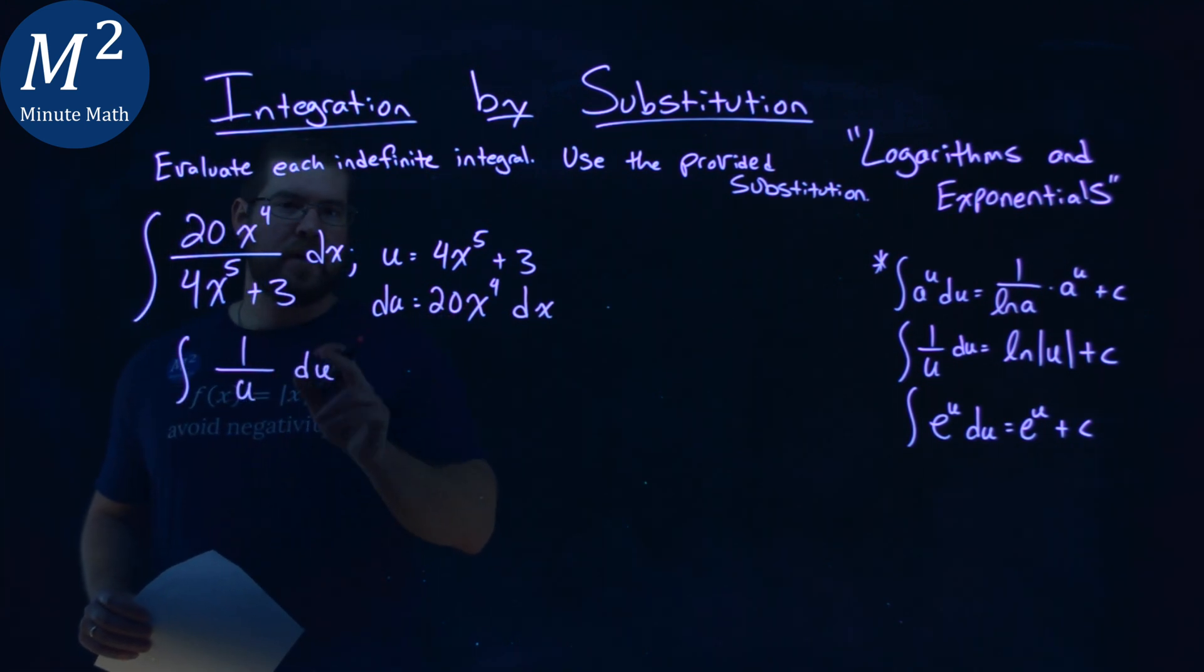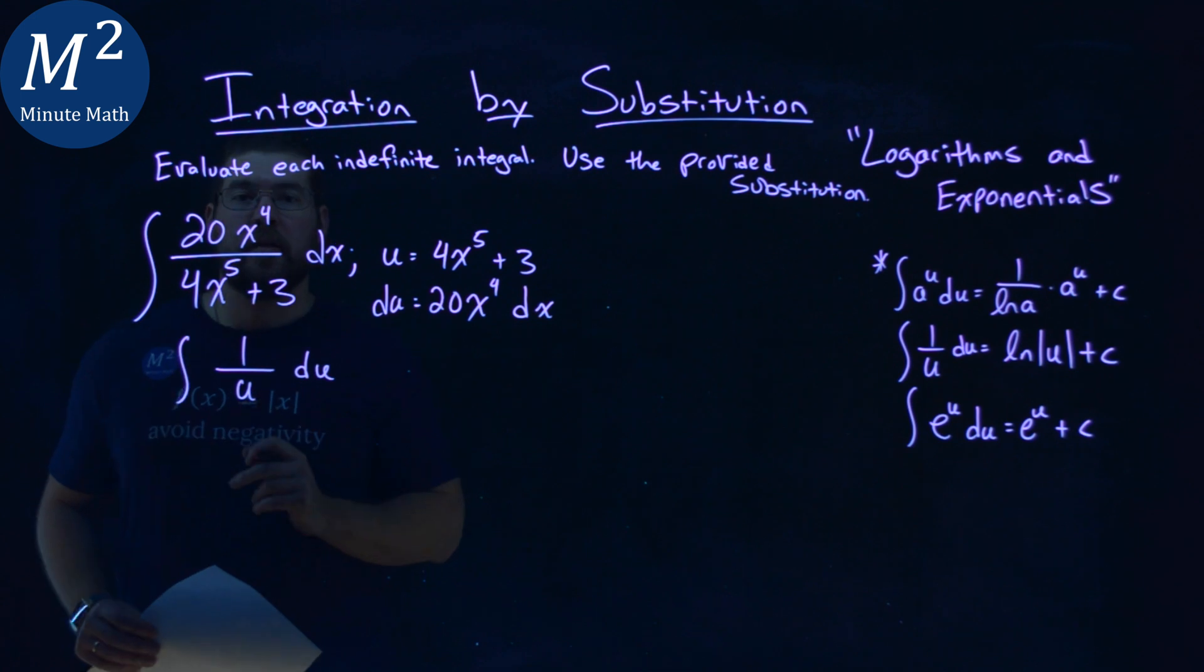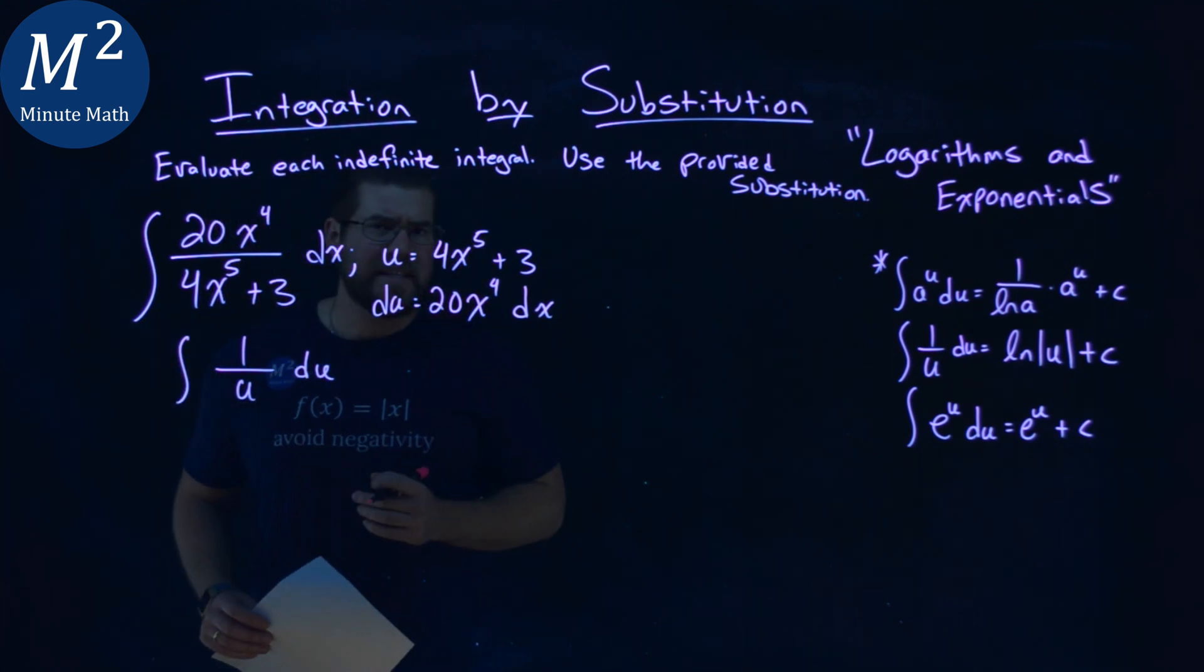Notice again, du is that, or 1 times du, same thing, 20x to the fourth dx, and then u is right there in the denominator. That's much easier to solve.